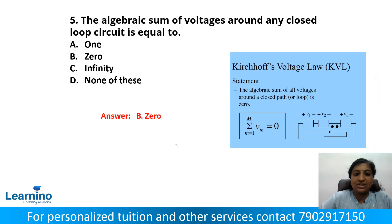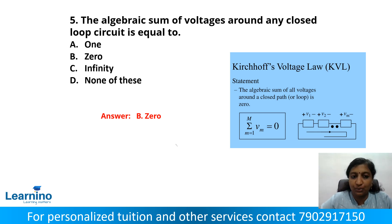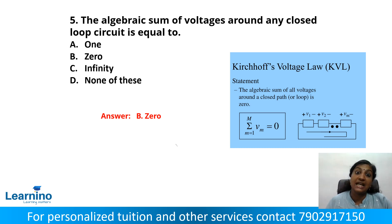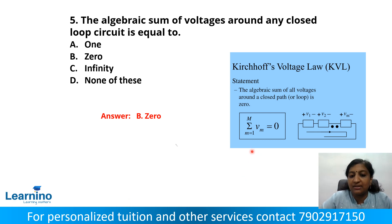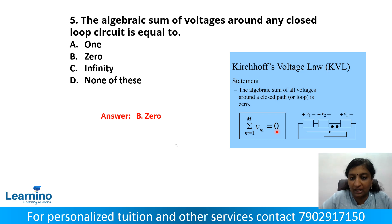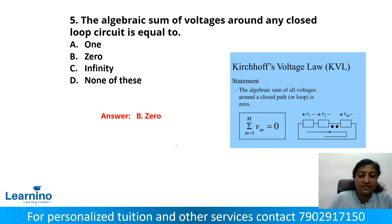Question number 5: The algebraic sum of voltages around any closed loop is equal to zero. The correct answer is option B — 0.